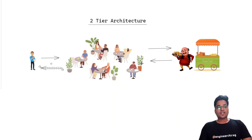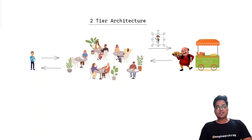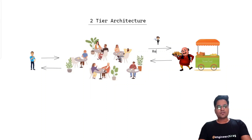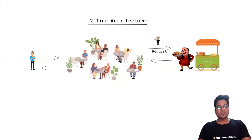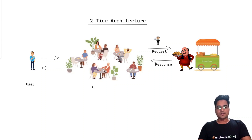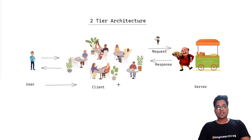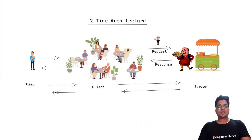Let's bring in some technical terms. After sitting down, when customers order, who do they order from? They order from a waiter — the waiter takes the order and finally brings it back. So when we make an order, we are making a request. This is our user, this is our client, and this is our server. Basically, the user uses the client, the client makes a request, and a response comes back from the server. Finally, when the client's work is done, it's bye-bye — that is the user's end.